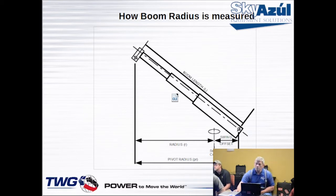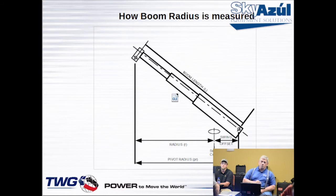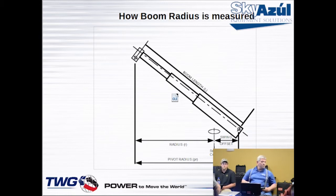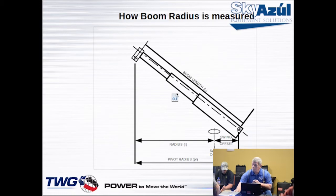Then we have the load radius, which is based on the load chart — the center of rotation from the load chart to the center of the load. There's also a measurement called swing offset, which on a hydraulic boom truck or RT is almost always a negative measurement, behind the hinge pin and behind the center of rotation, so it's automatically deducted. This is how we're able to measure from the centerline of rotation to the load and get an accurate radius, because the computer is doing those deductions.